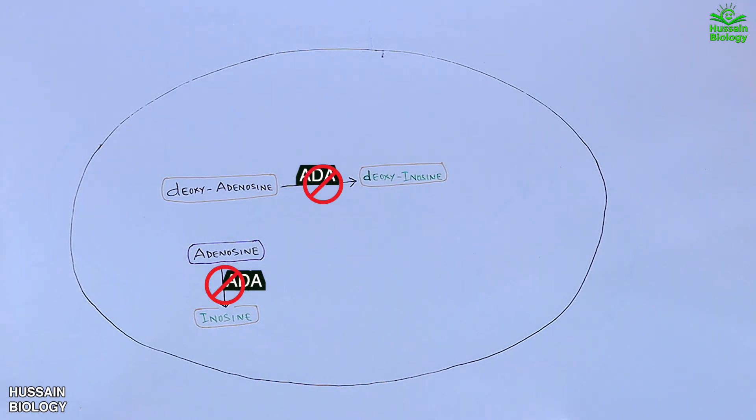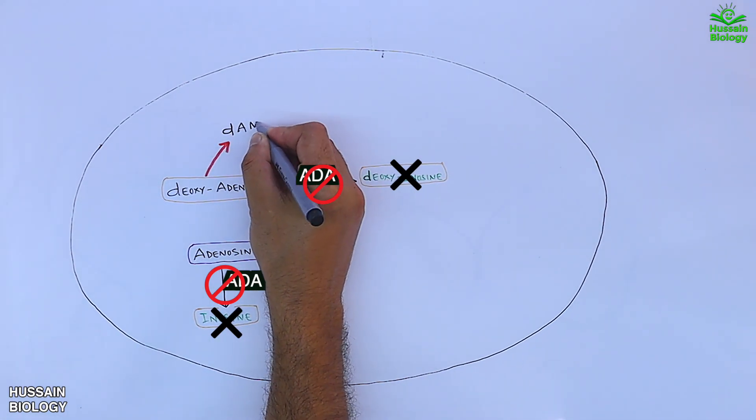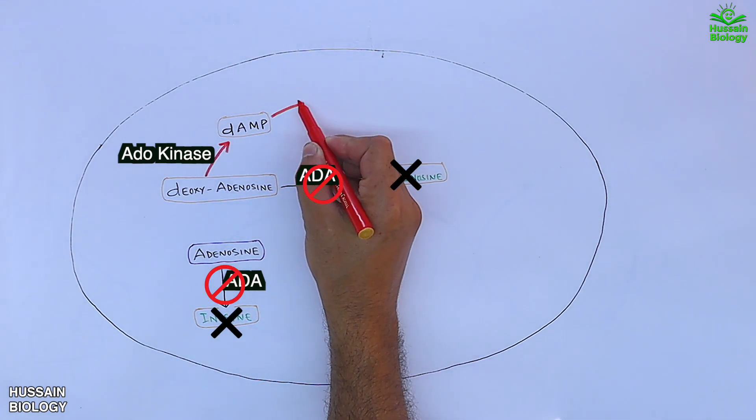Neither we get the inosine nor we get the deoxyinosine. Now this deoxyadenosine is converted into dAMP by the action of adenosine kinase, then this dAMP is converted to dATP.